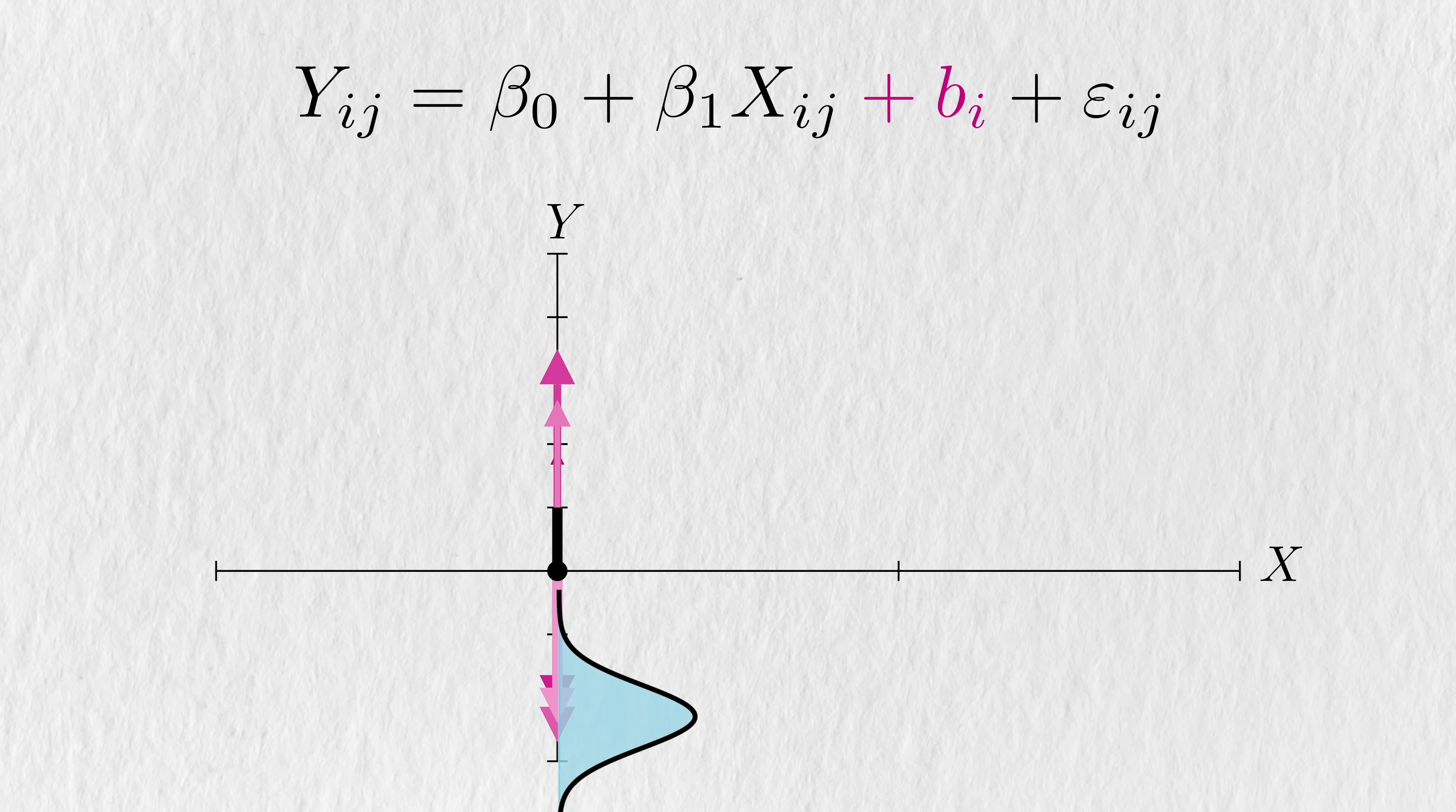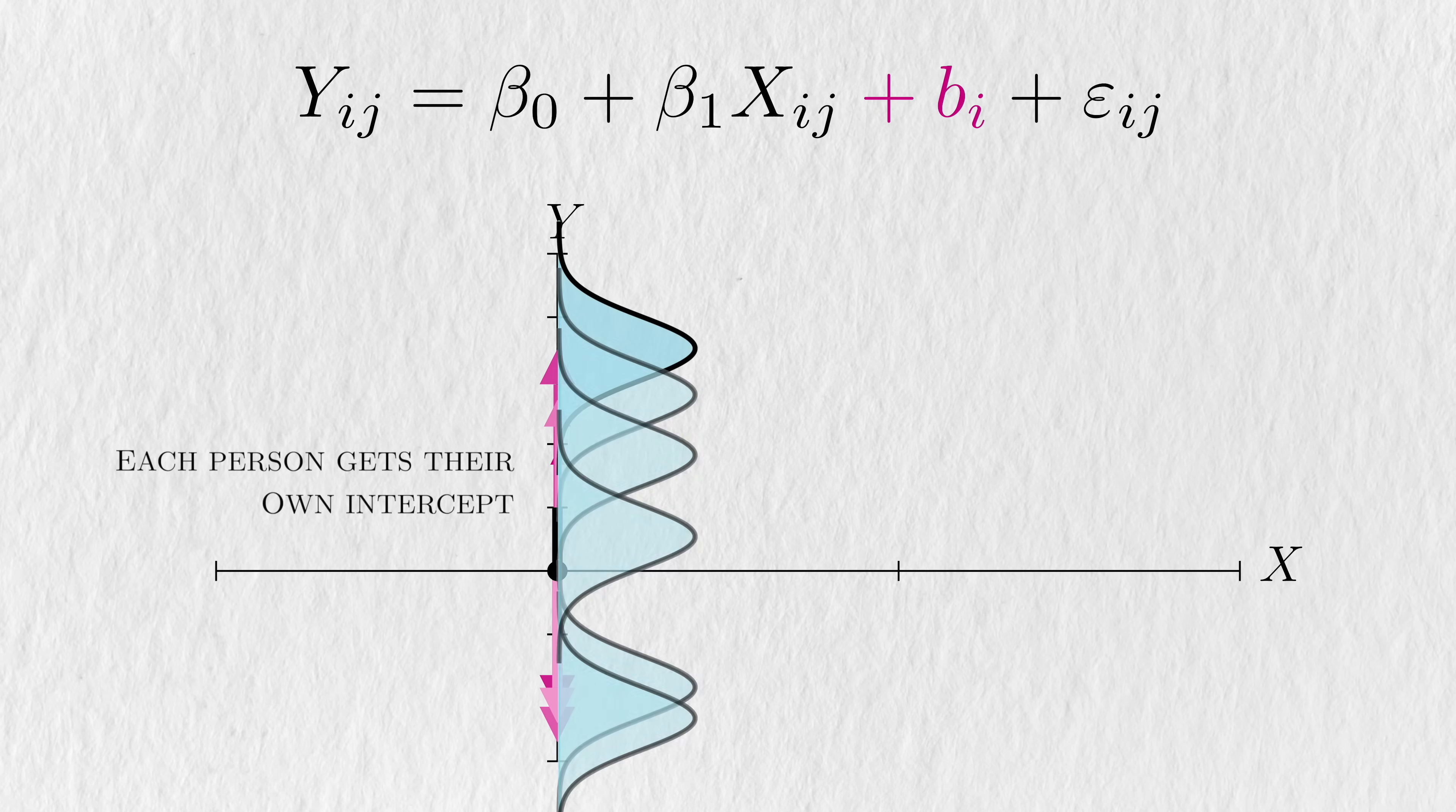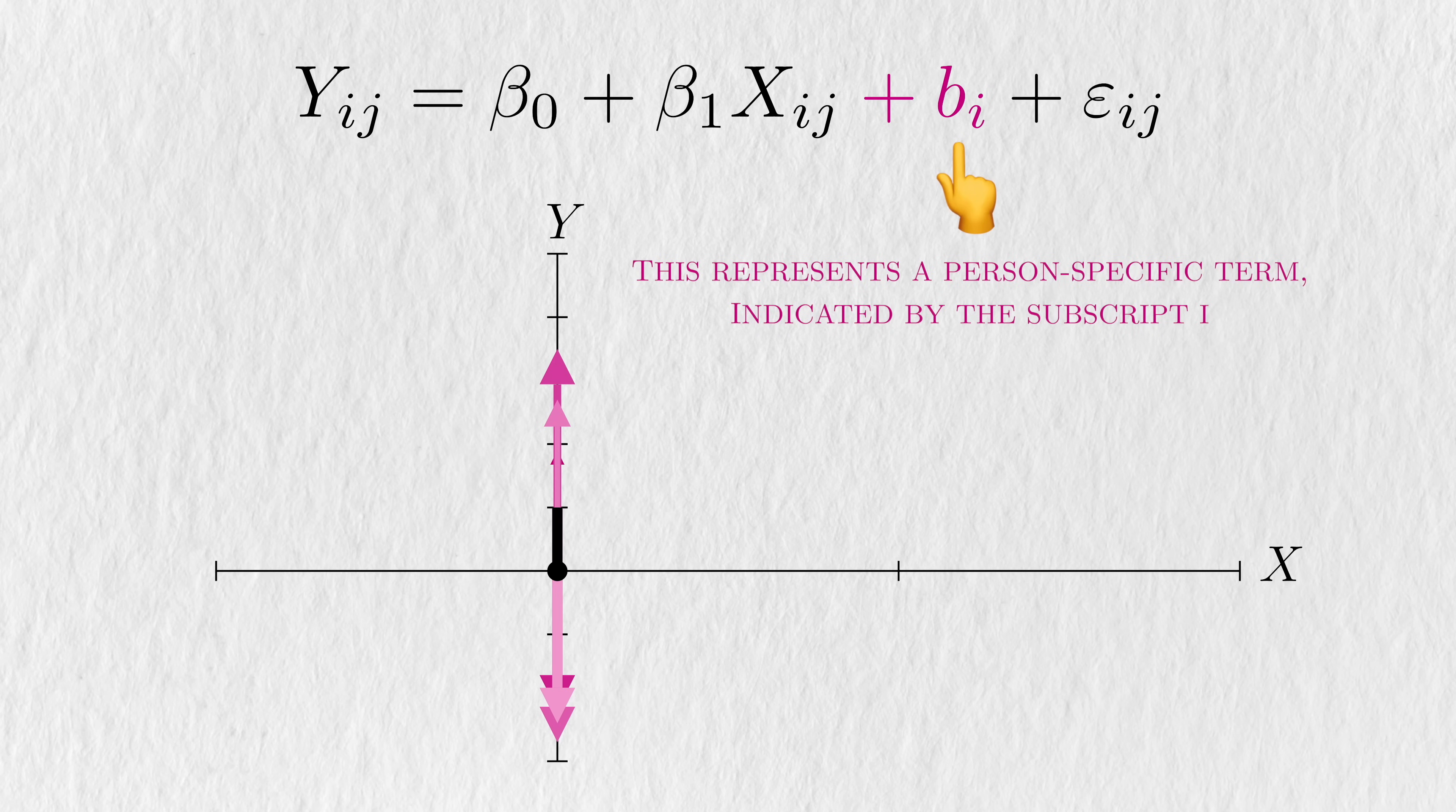Person 1 may be slightly under this overall beta0, while person 2 may be much higher. Each person in the data will be given their own intercept, so to speak. In the model equation, we depict this with an extra person-specific term, little bi, where this little subscript indicates that person i gets their own deviation from beta0. This is what we'd call a random intercept model. This bi is what we'd call a random effect. I'll talk about this soon, but just think of anything that's a random effect as a person-specific deviation.